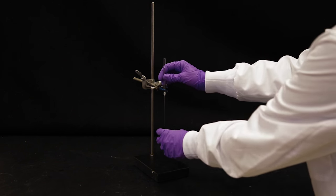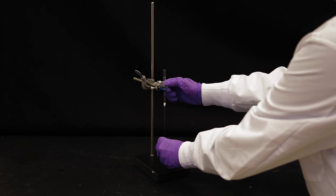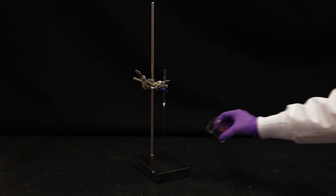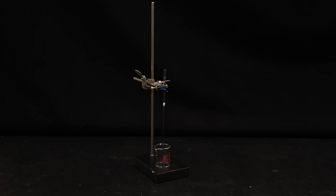Using the clamp, attach the filtration pipette to the ring stand. Place a beaker directly beneath the filtration pipette.